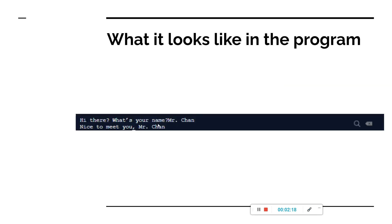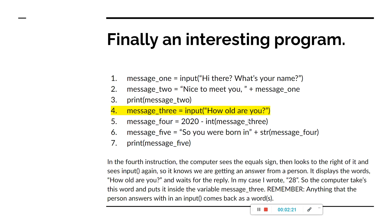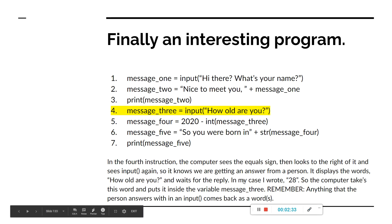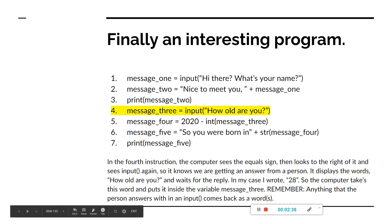In the fourth instruction, the computer sees the equal sign, then looks to the right and sees 'input' again, so it knows we're getting an answer from a person. It displays the words 'how old are you' and waits for the reply. In my case I wrote 28, so the computer takes this word and puts it inside the variable message three.